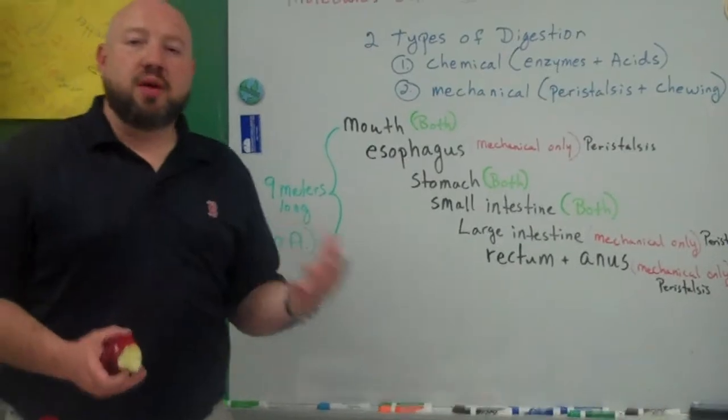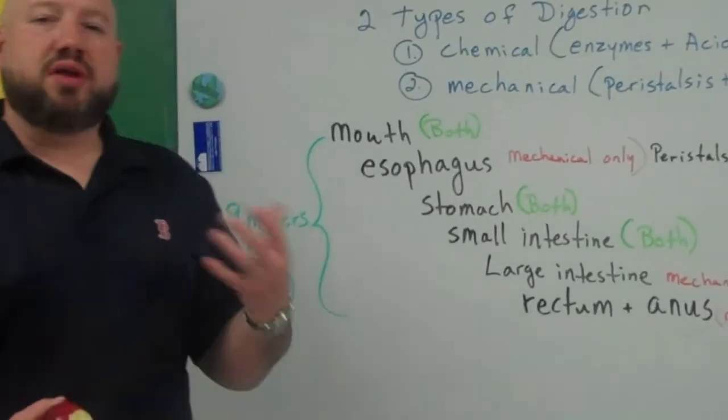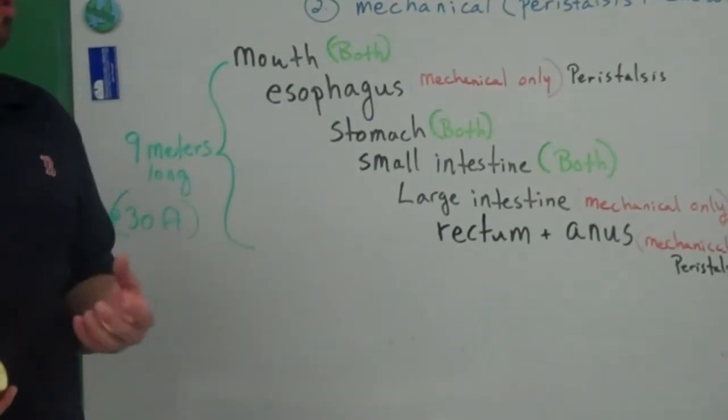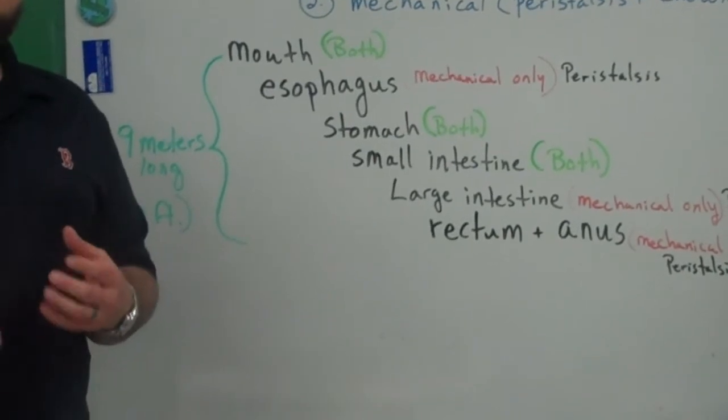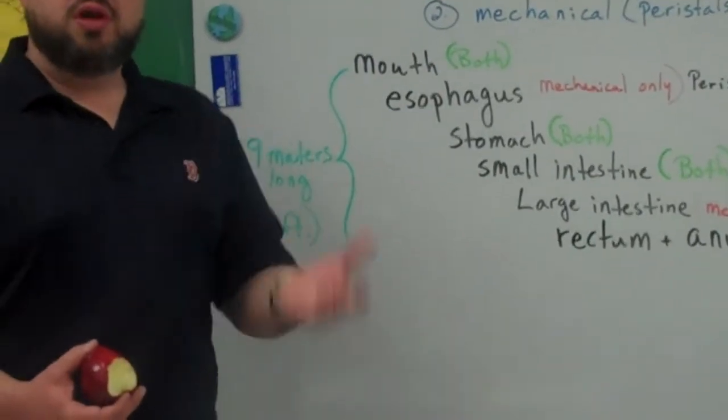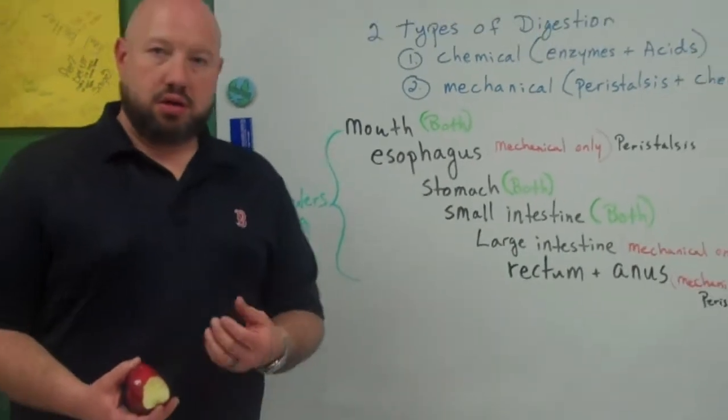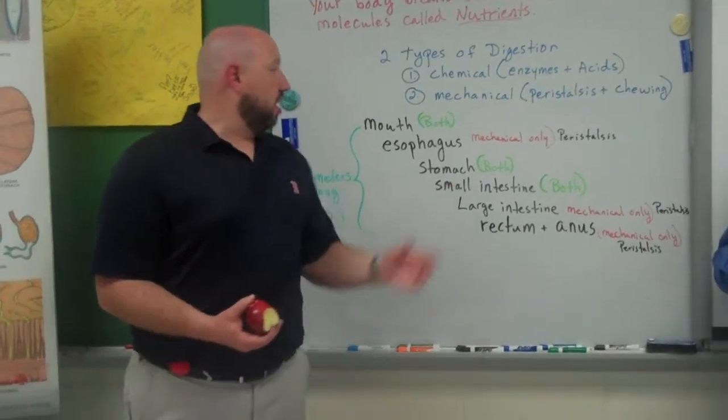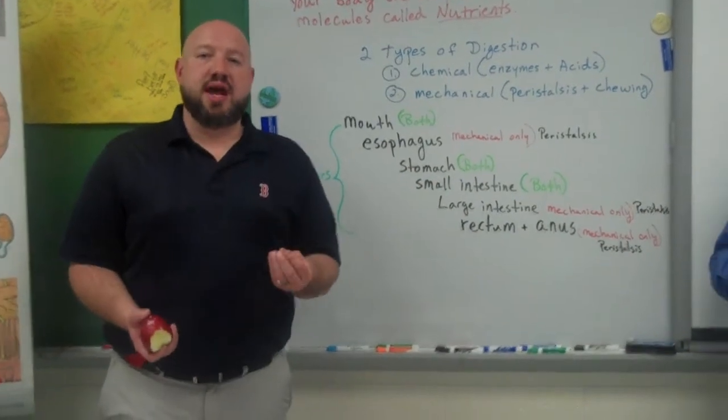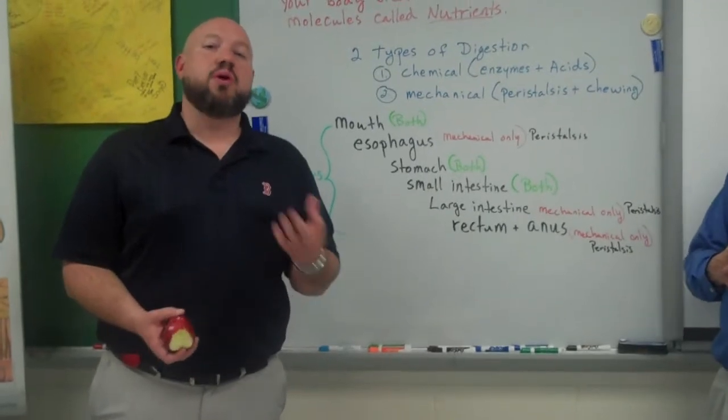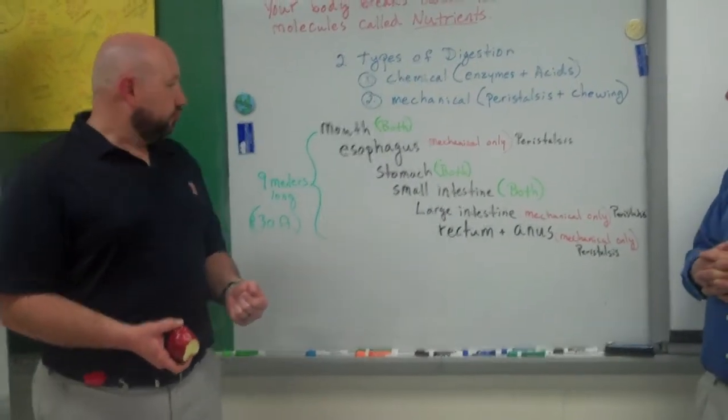In the stomach, you have both chemical and mechanical. Mechanical digestion, because within the stomach, you have muscles that contract and relax, which turns the food around, mixes up almost like a dryer with clothing. It's chemical because it starts to break down the food materials, specifically proteins, with enzymes and acids.